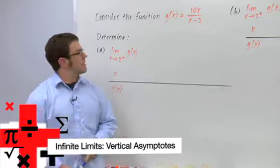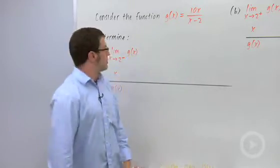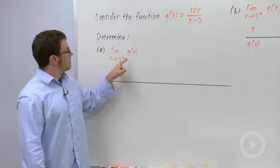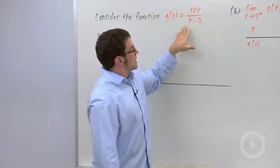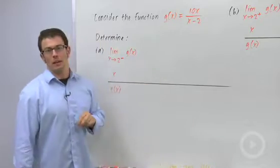Let's take another look at one-sided limits. Consider the function g of x equals 10x over x minus 2. I want to look specifically at the limit as x approaches 2 from the left of g of x. Now you know something interesting is going to happen, because if x equals 2, this thing's undefined. So we're going to sneak up on it from the left.